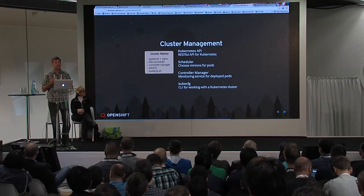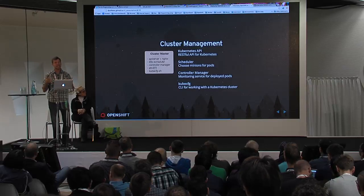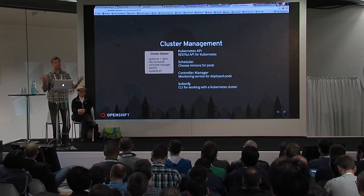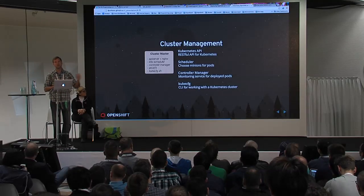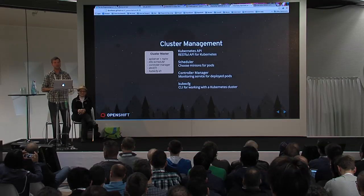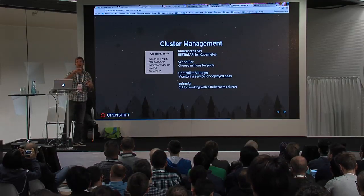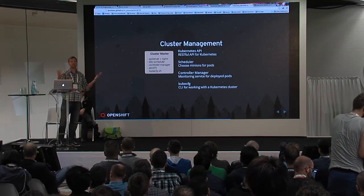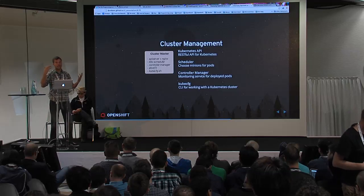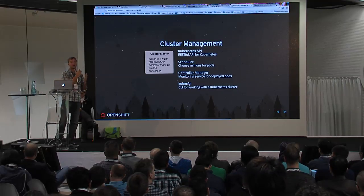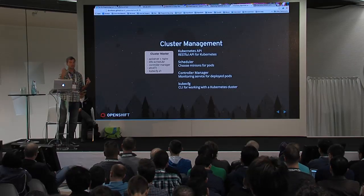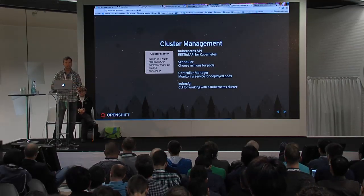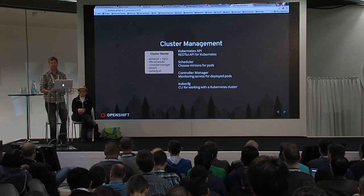For cluster management: the kube-api is how clients and users interact with the system. The scheduler — simplistic now but meant to be more extensible — decides where to run pods: minion 1, 2, or 3. The controller manager works with the Kubernetes API, monitoring pod status. If you want three replicas of an Apache pod for HA or scaling, the controller manager ensures all three are always running — if one is deleted it spins it back up; if there are four or five it tears the extras down. kube-cfg is the command-line tool for interacting with the system.